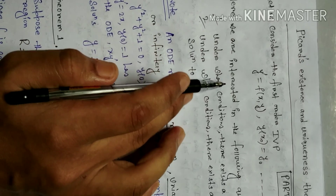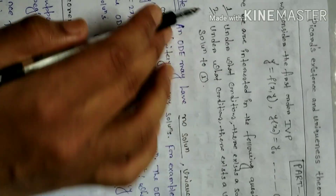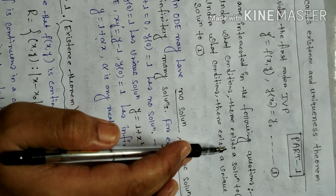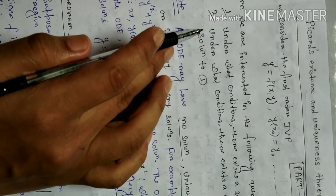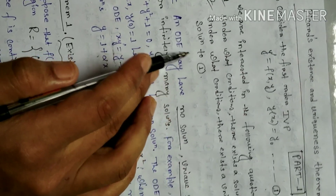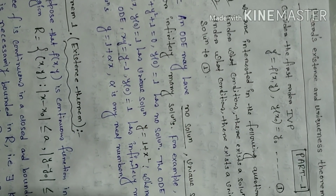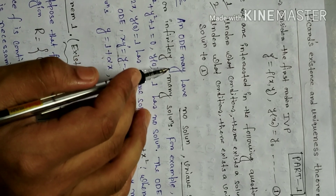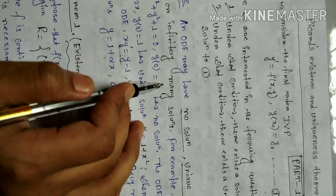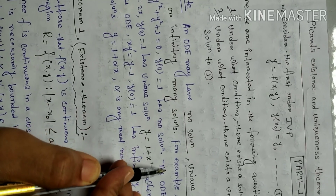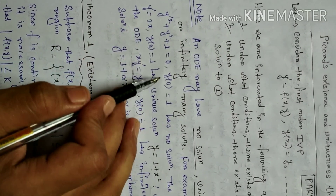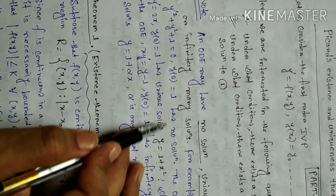We are interested in the following questions. Number 1: under what conditions does there exist a solution to equation 1? And number 2: under what conditions does there exist a unique solution to equation 1? An ODE may have no solution, a unique solution, or infinitely many solutions. For example, y'² + y² + 1 = 0 under y(0) = 1 has no solution.